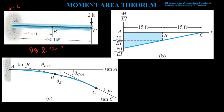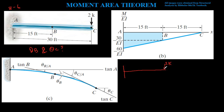We're given this question and we're asked to find the slope at point B and at point C — so we're asked to find theta B and theta C. We have a 2K downward force applied to the beam.